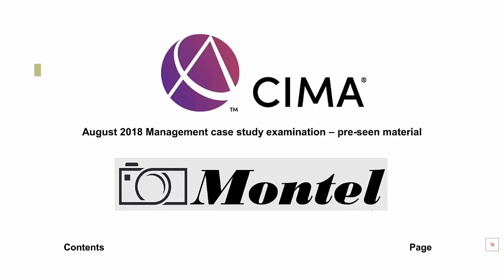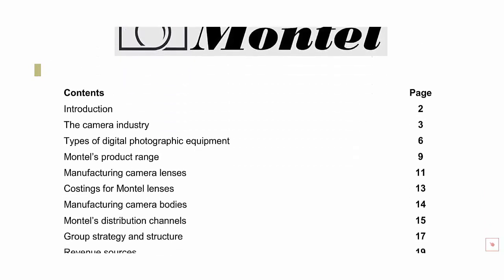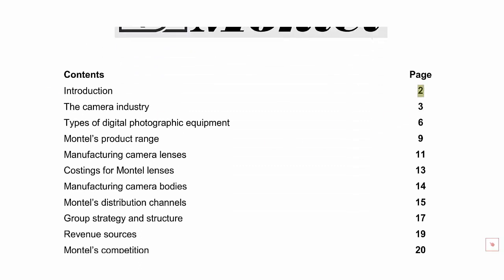We'll cover this content in five videos. The first video deals with pages 2 to 8 of the Pre-Scene document, covering the introduction, the camera industry section, and the types of digital photographic equipment. In the second video, we'll cover pages 9 to 14, starting with Montel's product range before looking at how they manufacture the vital component of the lenses and the costings for those lenses, then how they manufacture the camera bodies.